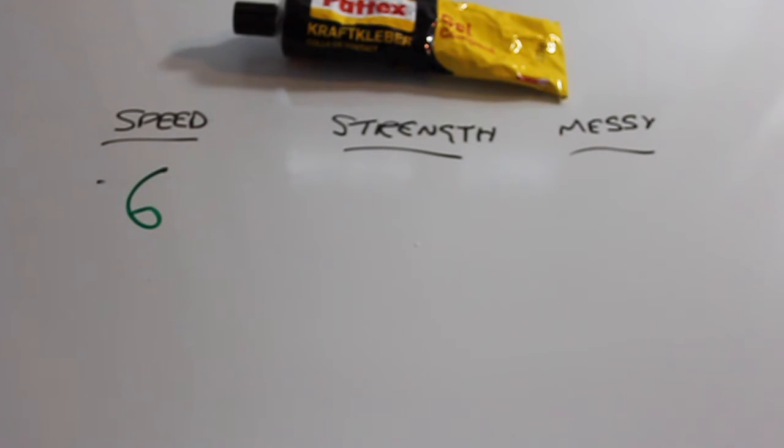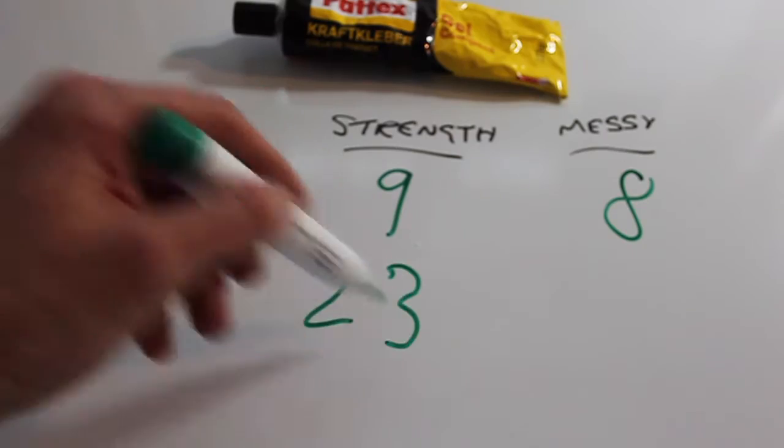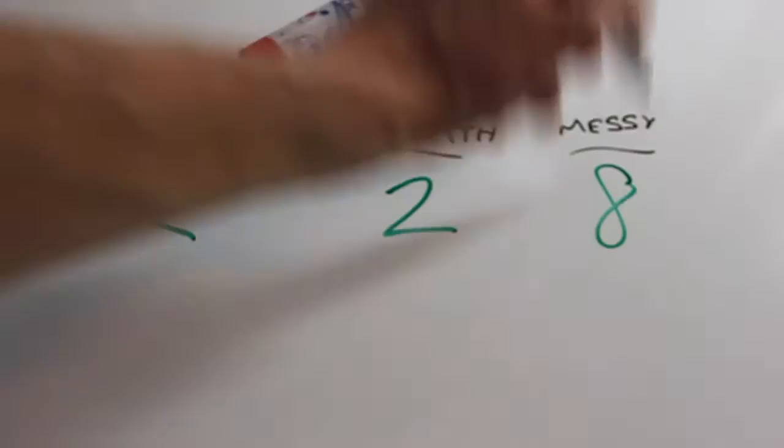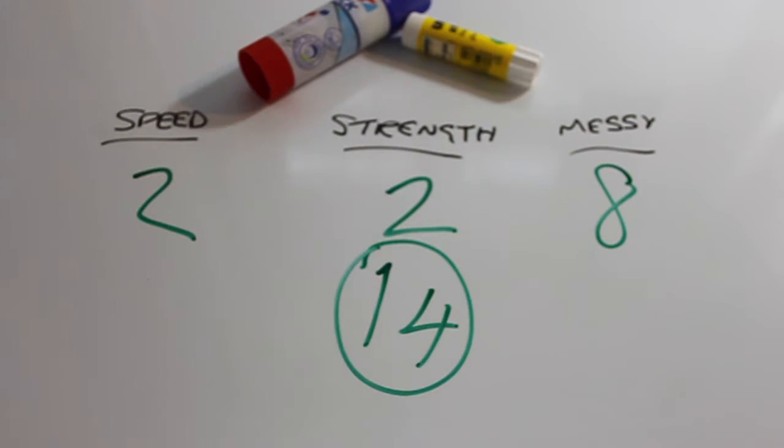So how do we score each one? First of all we've got the contact glue. I've given that an overall score of 23. Pretty good. The Pritt sticks, the glue sticks, not really ideal for this purpose.